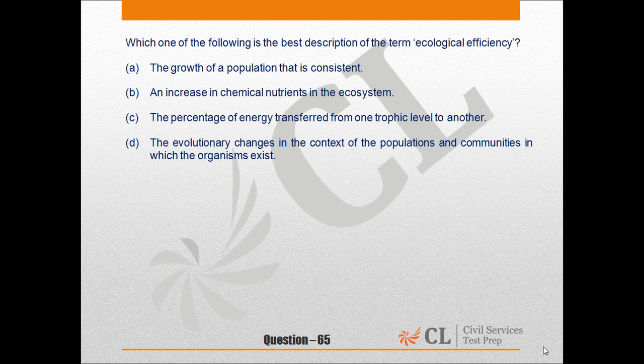The correct answer is c. The percentage of energy transferred from one trophic level to another is called Ecological Efficiency. The efficiency of energy transferred from one level to another varies from 5% to 20% depending on the types of organisms and environmental conditions.